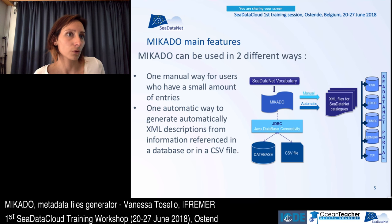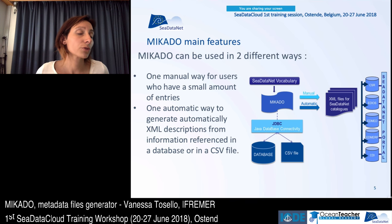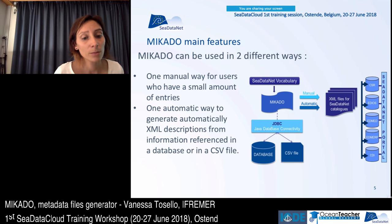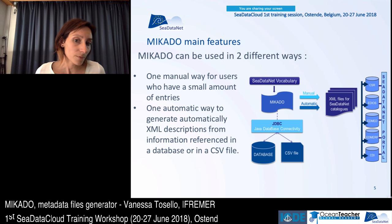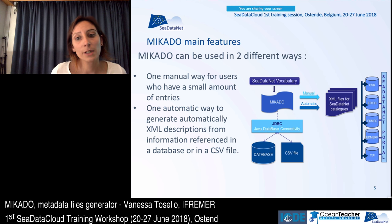Mikado can be used in two different ways. One is a manual way for users who have a small amount of entries — in that case, the user inputs information manually in the Mikado interface. And Mikado can also be used in an automatic way to generate XML descriptions for information referenced in a database or in a CSV file. In that case, you write SQL queries in Mikado to interrogate your database and get the information necessary for the CDATANET catalogues.